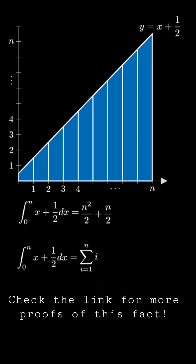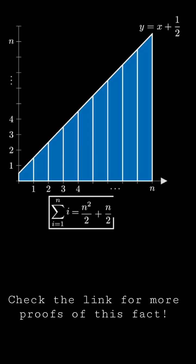But now that we've computed the definite integral in two separate ways, we see that the sum of the first n positive integers is equal to n squared over 2 plus n over 2.